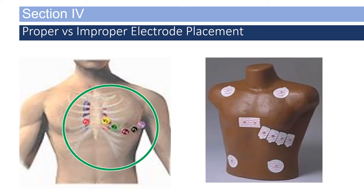Consider this next image — what's wrong with it? V1 and V2 are abutting one another, and V3, V4, V5, and V6 are simply in the wrong anatomical spot. Not to mention, if you notice, they have used three different types of electrodes for the same patient. Don't do that.